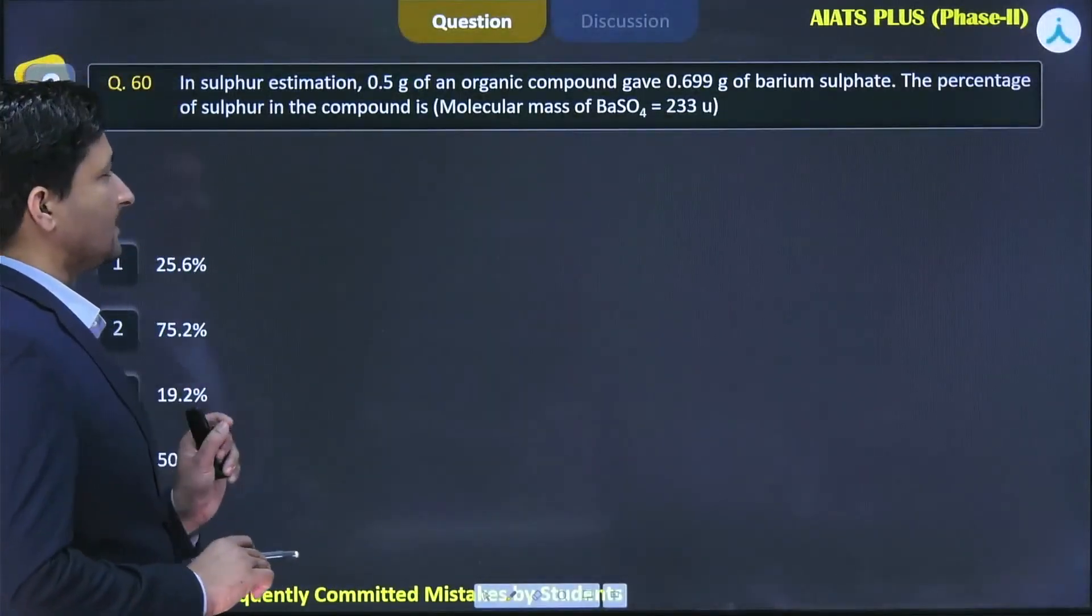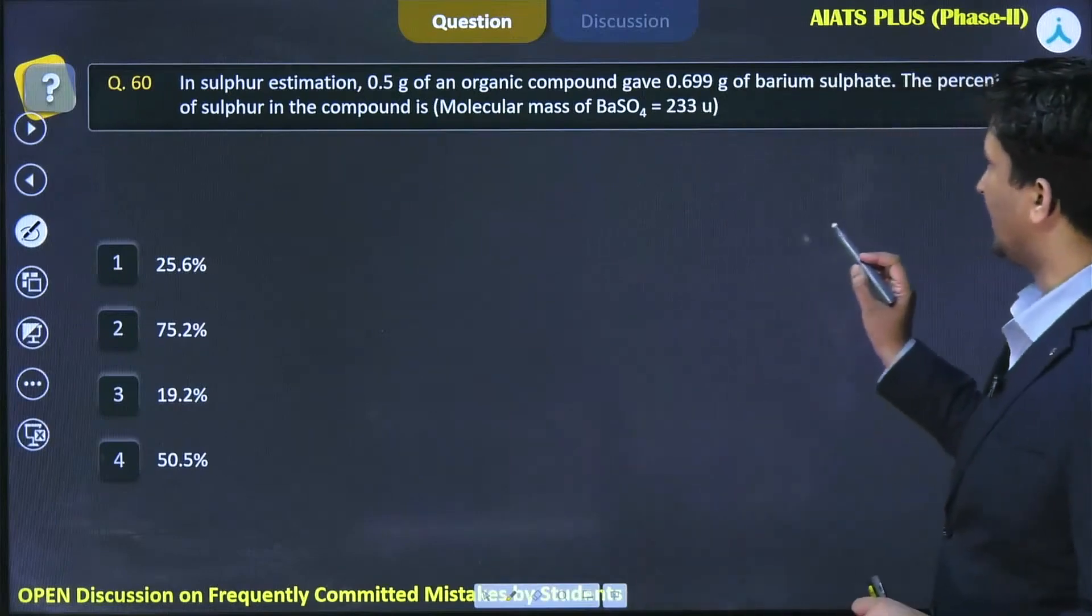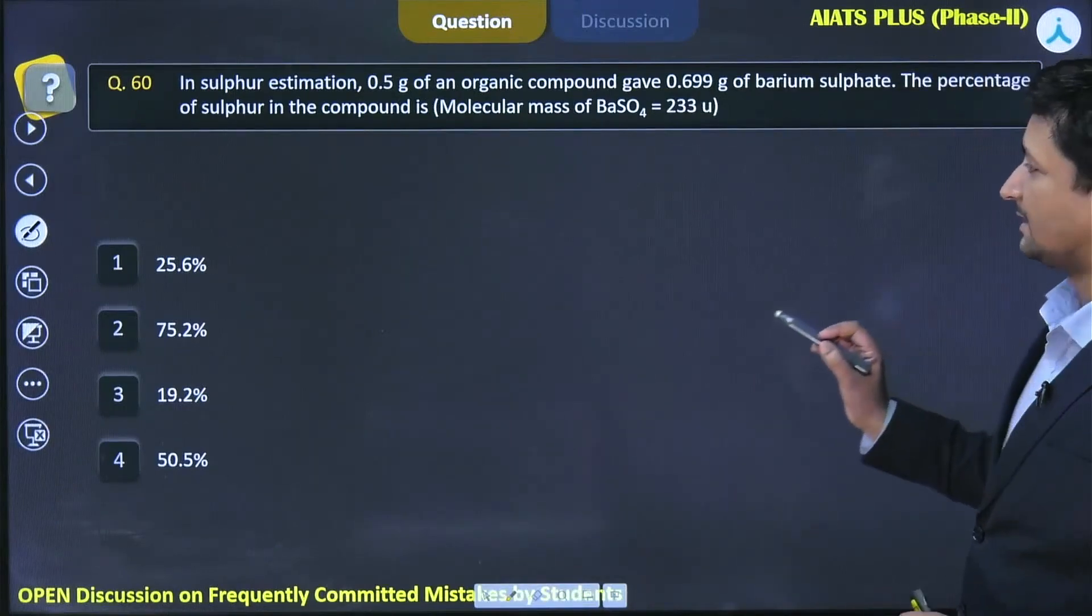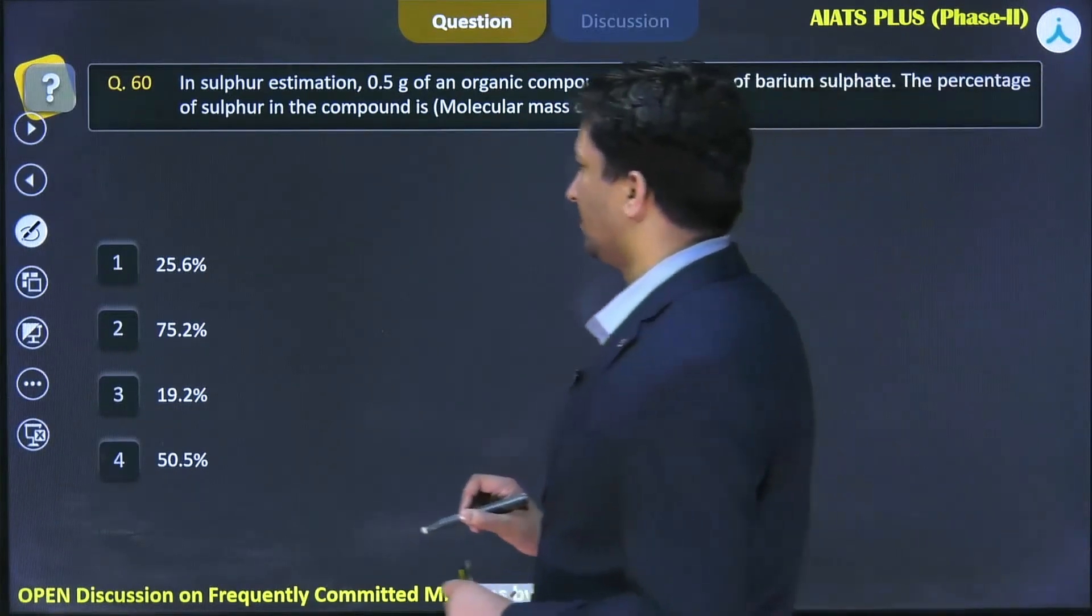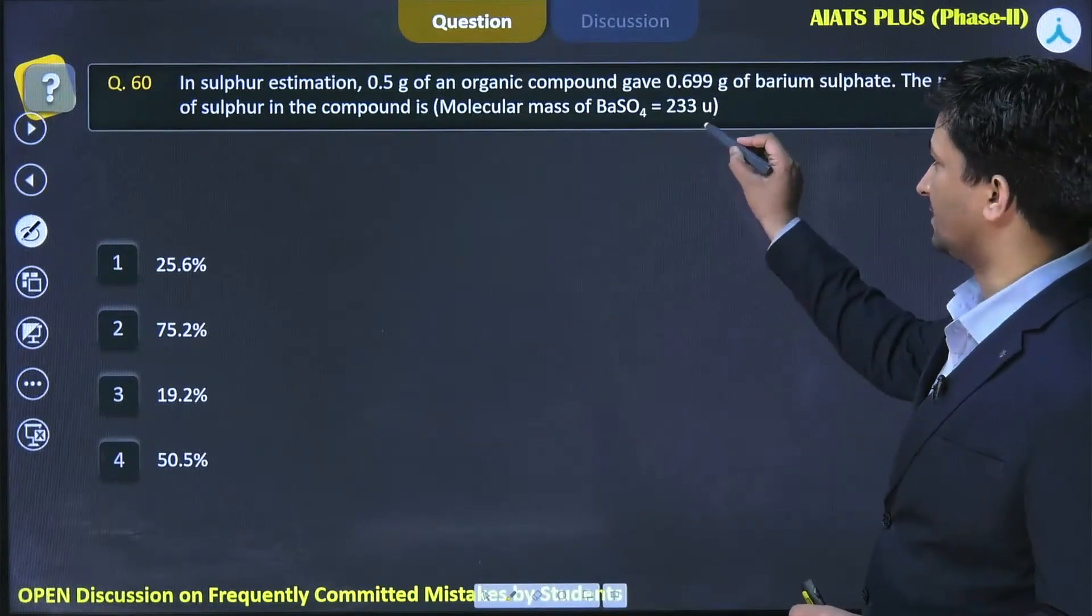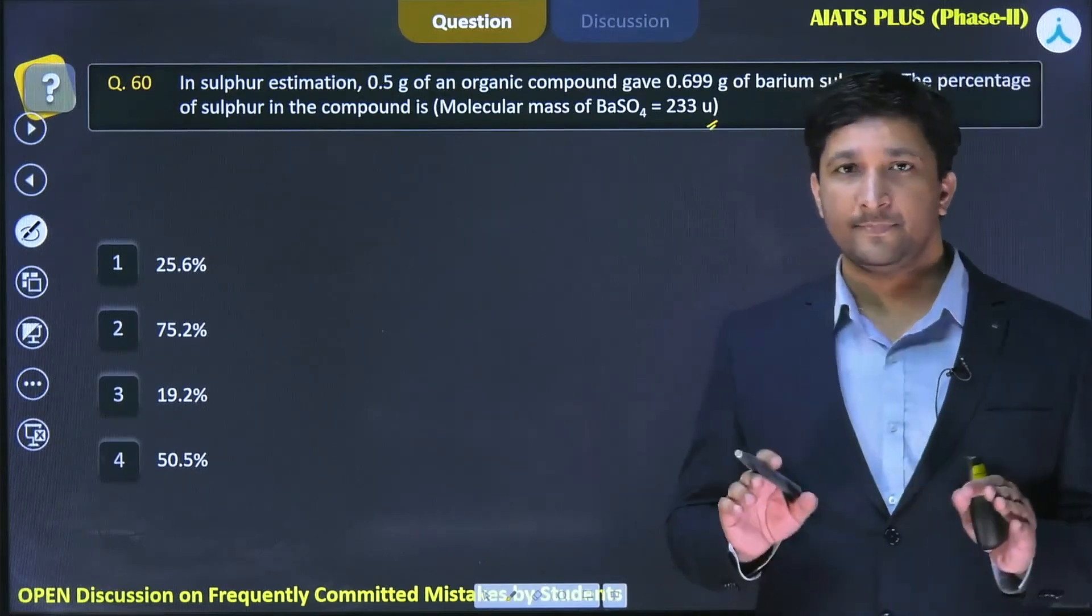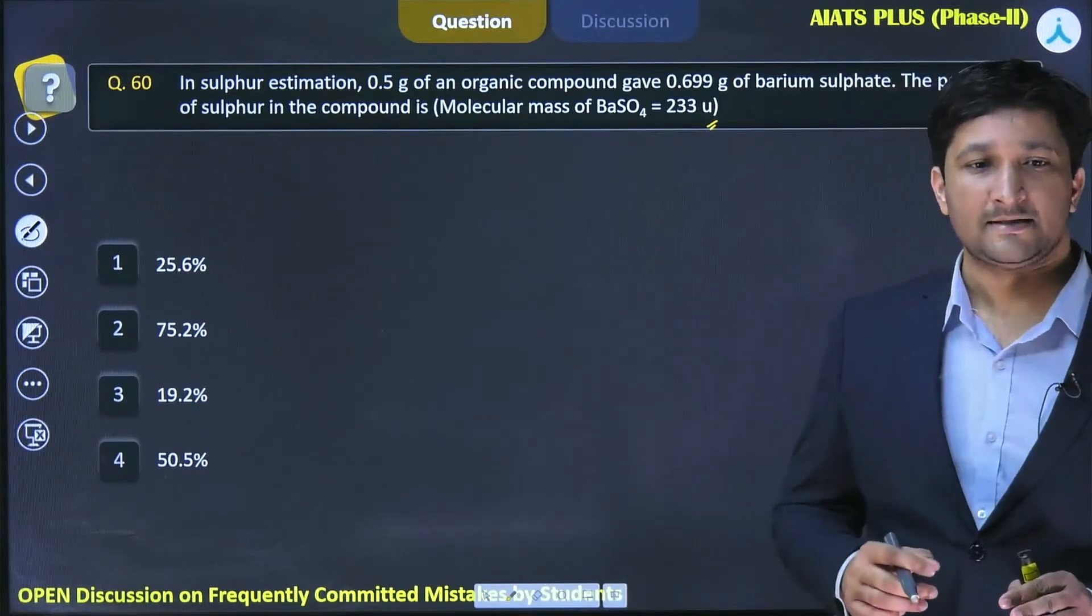The question says that in sulfur estimation, 0.5 grams of an organic compound gave 0.699 grams of barium sulfate. The percentage of sulfur in the compound is asked. The molecular mass of barium sulfate is 233. First, you have to understand the basic process involved in the estimation of sulfur.